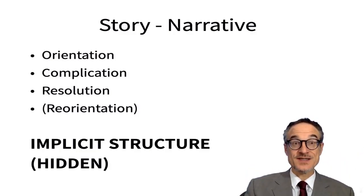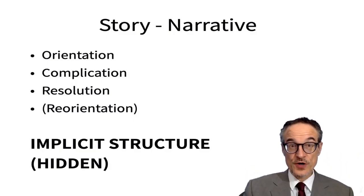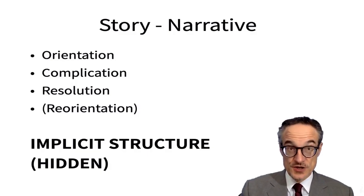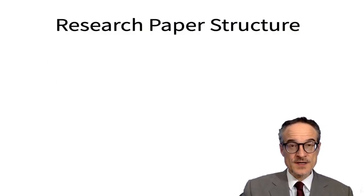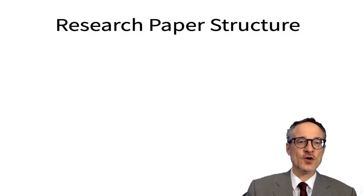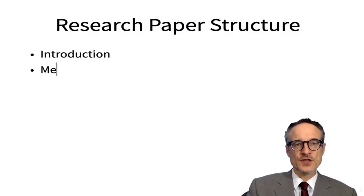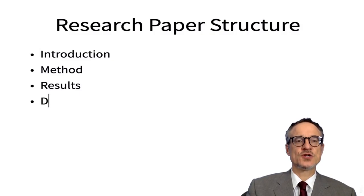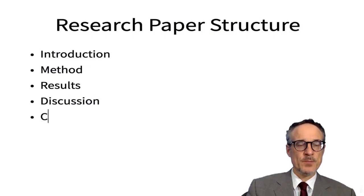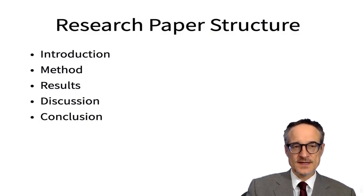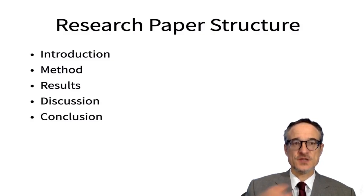The structure is there, and a good story has a good structure. If you're writing a research paper — academic writing or technical writing — a common research paper structure is introduction, method, results, discussion, and conclusion. If you're working in sciences, this is the kind of paper that you write.